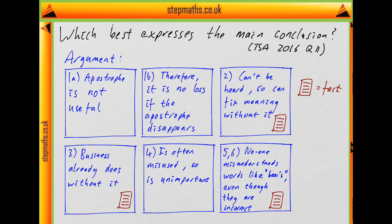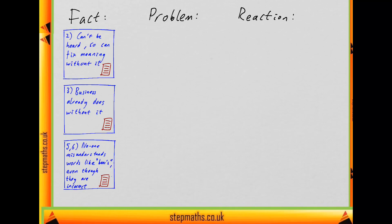Now let's try to put this in order to figure out which of these parts is going to be the main conclusion. Nowhere in this argument does the writer say anyone should do something. They're not proposing a course of action. But there are facts about how we use apostrophes, then issues arising from that, and then the writer's reaction. I've divided this into fact, problem, and reaction.